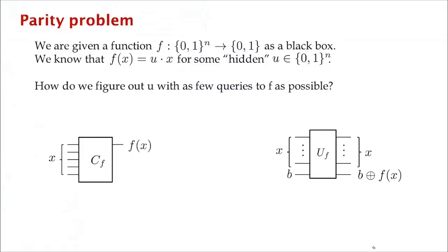To see how powerful this Hadamard transform can be, let's look at the following simple problem: the parity problem. We're given some function f from n bits to 1 bit, given as a black box — a program that computes this function for us, but we cannot look inside. All we can do is run this program on any given input — a black box containing a circuit for computing f.